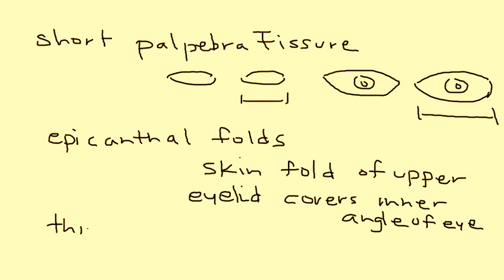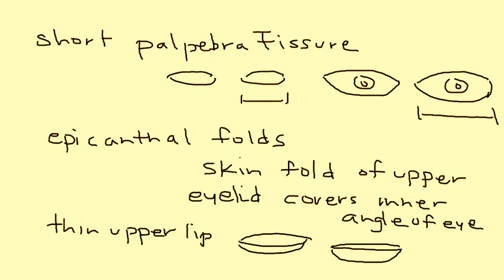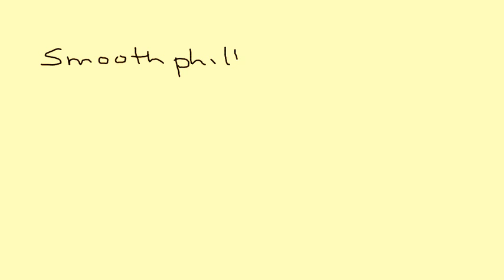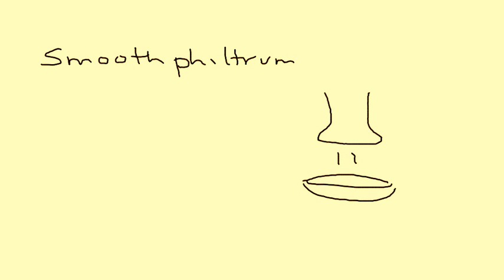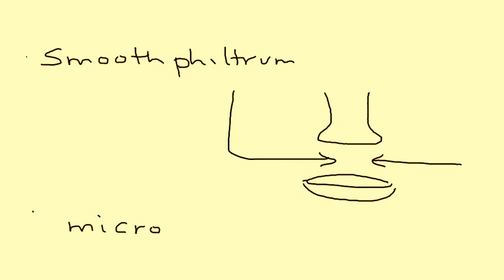The next facial feature is a thin upper lip. After that is smooth philtrum — the philtrum is the groove that exists between the nose and the lip, and in a person with fetal alcohol syndrome it will be flat and smooth, essentially absent. There's also microcephaly, which simply means a small brain.